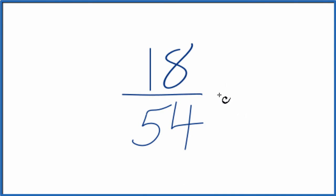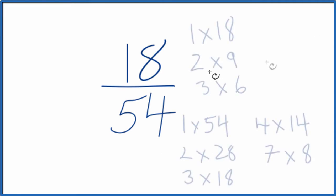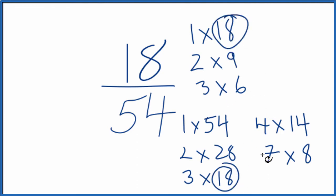To do that, we need to find a common factor that goes into both 18 and 54. So here are the factors for 18 and 54. As I'm looking at the factors here, the largest factor, the greatest common factor is what I'm looking for, and I see I have 18 here and 18 here.